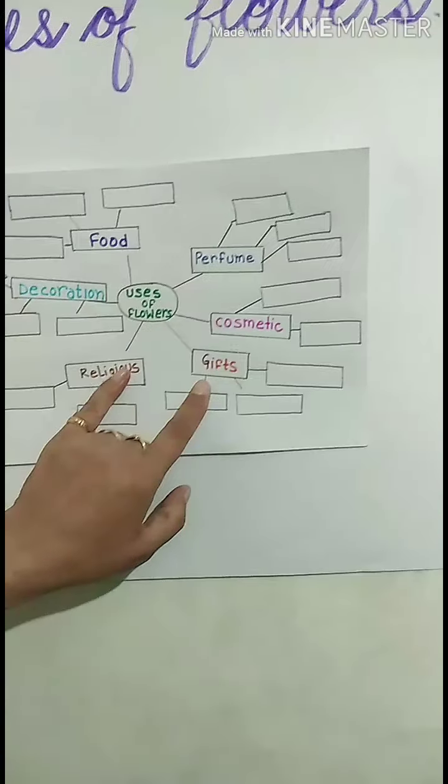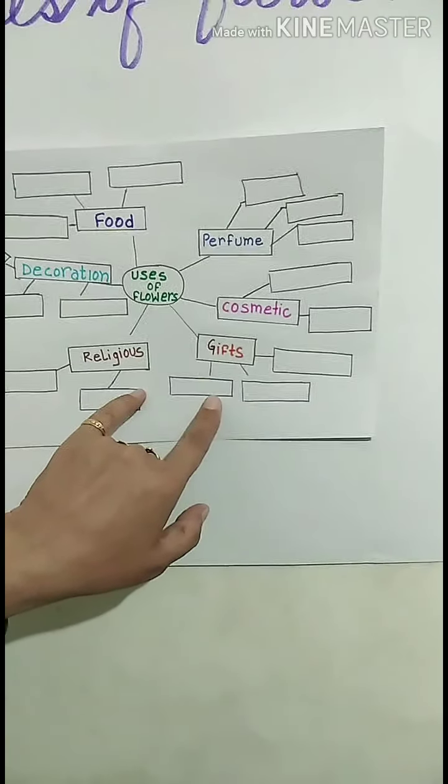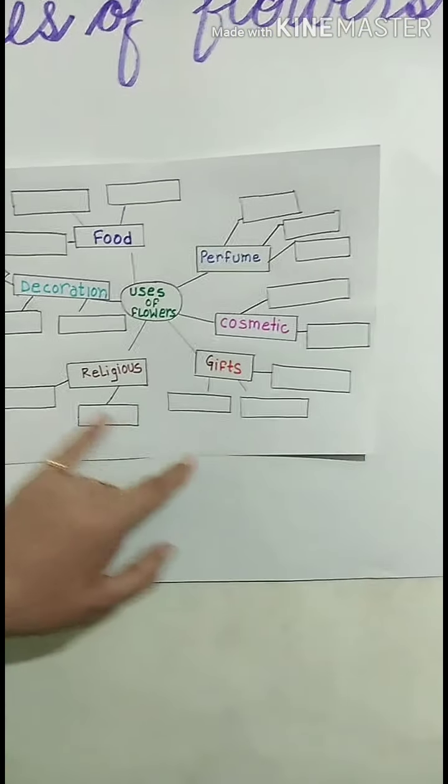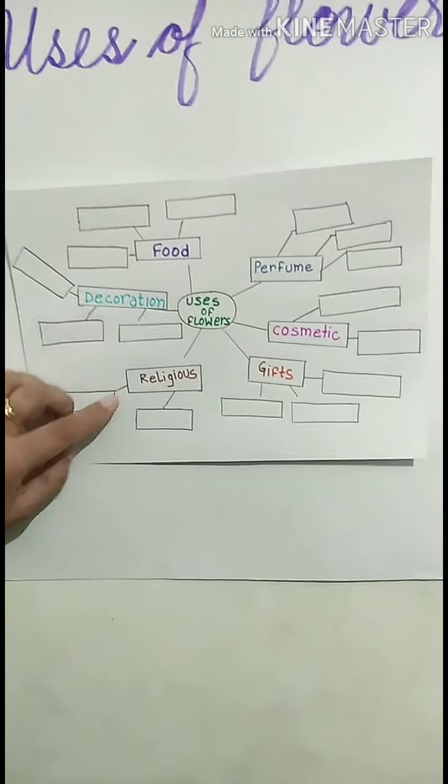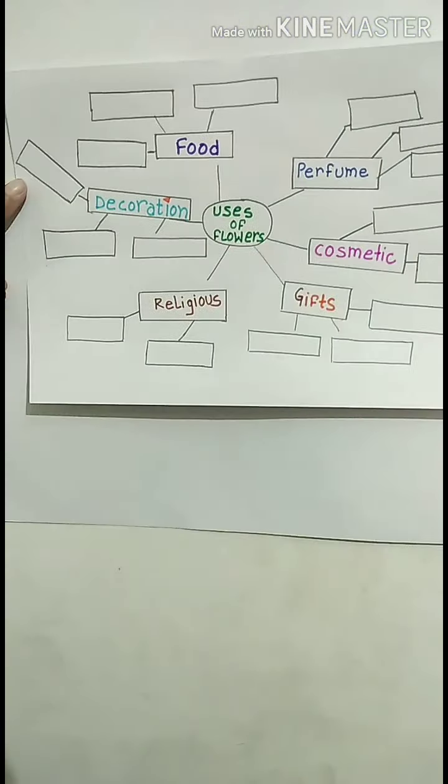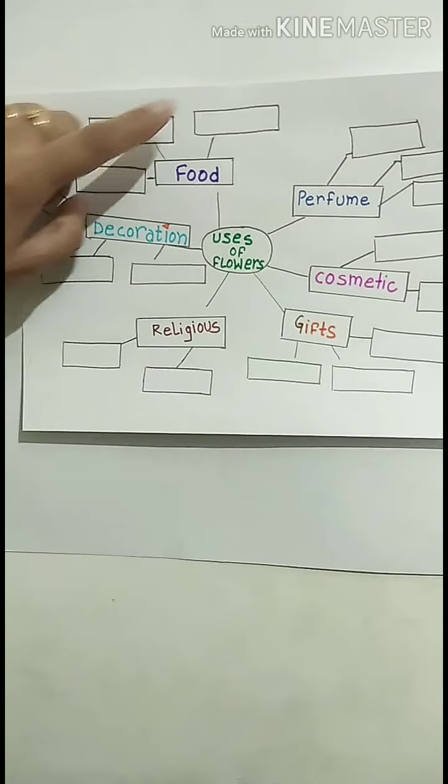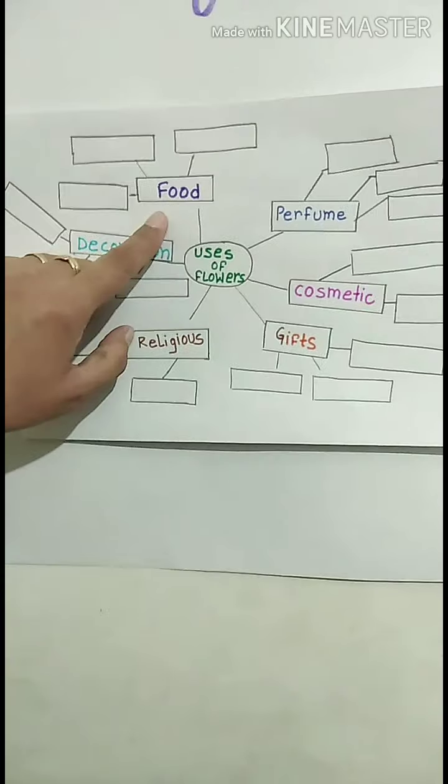Then you have to write down the column that is cosmetic. You have to write the name of two flowers that are used in cosmetics. Then as a gift, which flower? Three flowers names you have to write which are used for gift. Then two flowers names which are used for religious. Next, three flowers names that you use for decoration and three flowers names that are used in food.